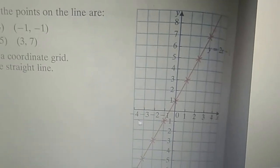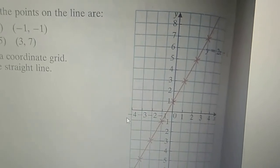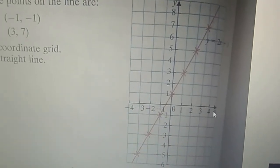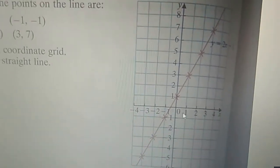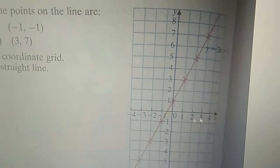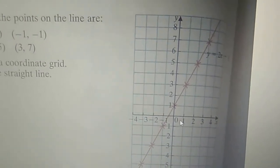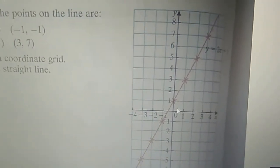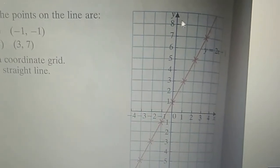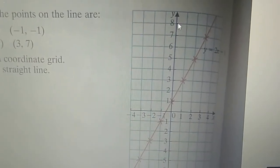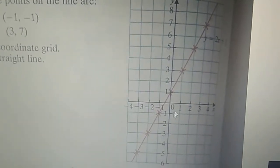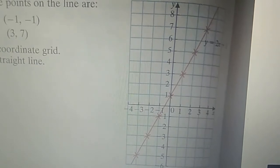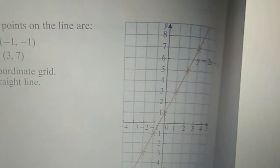On the left side of the x-axis we have all the negative values, and on the right side of the x-axis we have all the positive values. In the center we have zero, both for the x-axis and y-axis. On the upper side of the y-axis we have all the positive values, and on the lower side of the y-axis we have all the negative values.